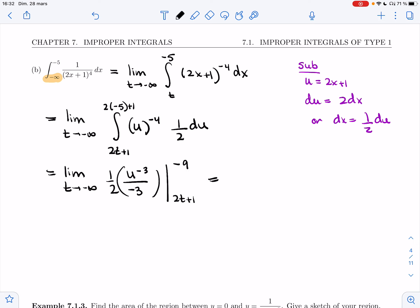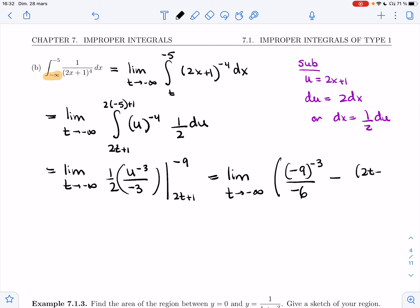All right, we plug in the bounds we're getting there. So I'm getting minus 9 to the minus 3 over minus 6 minus 2t plus 1 to the minus 3 over minus 6.